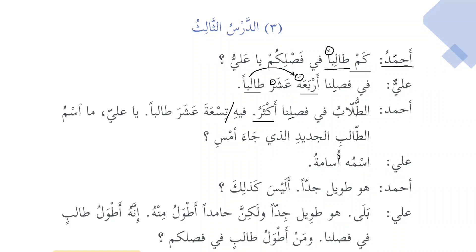Ya Aliyu, ma ismu at-talibi al-jadidi al-ladhi ja'a amsi — what's the name of the new student who came yesterday? Ma is ismul istifham, used to ask a question. Ismut talibi is mudaf mudaf ilayh — the name of the student. At-talib is mawsuf, al-jadid is sifah. Al-ladhi is ismul mawsul, used to connect the previous part of the sentence to the next. After al-ladhi, we generally have a complete sentence — either verbal or nominal. Here ja'a is a verbal sentence: al-ladhi ja'a amsi — who came yesterday. Amsi is a dharf and it is mabniyun 'alal kasra — it is always mabniyun 'alal kasra.